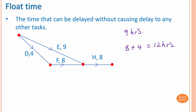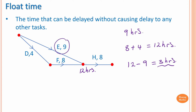So the earliest time to start activity H is 12 hours. Activity E completes in nine hours, so 12 minus nine equals three hours. Therefore, activity E has three hours spare, meaning the float time for activity E is three hours.